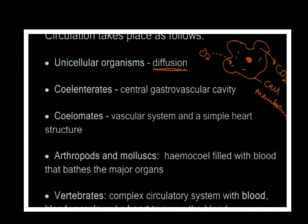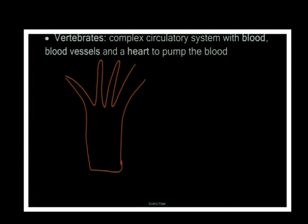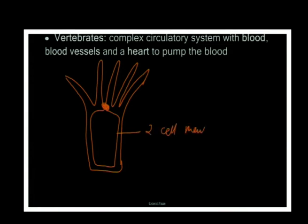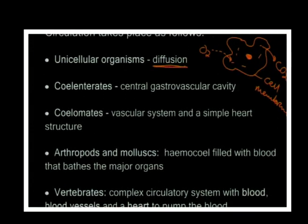Then you get the coelenterates, such as hydra. Hydra has a structure with tentacles that stick up and a mouth in the middle leading into a cavity. It's diploblastic - only two cell layers. It has one opening called the hypostome, and everything goes in and out through that one opening into the central gastrovascular cavity called the solenteron.